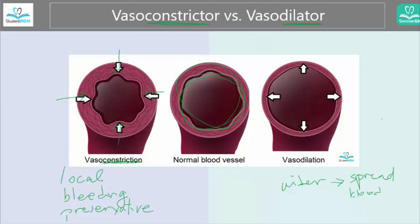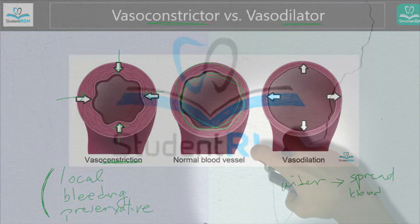So this is what's happening: the normal blood vessel originally dilates and goes wider, but we want to constrict it again because we want to provide all those benefits. I hope this makes sense. If you have any questions, my name is Claire. I'm the founder of StudentRDH, SmarterDA — Dental Hygiene and Dental Assisting Exam Prep Solutions. Thank you.